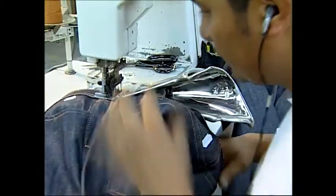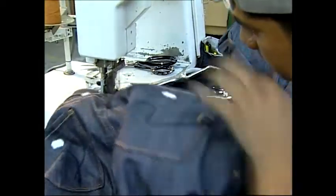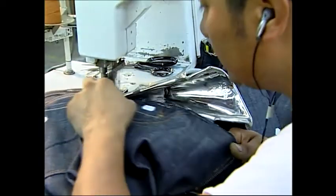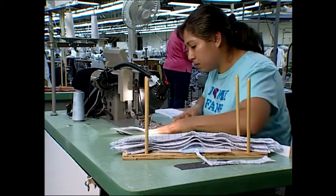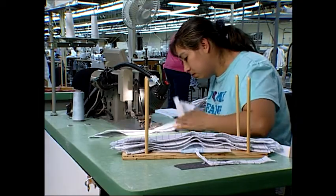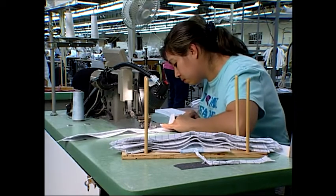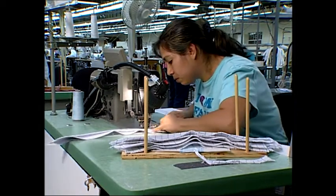The apparel industry uses about 30 stitch patterns that are categorized in six classes, ISO 100 through 600. The decision on which stitch to use is based on the seam it will create, the location of that seam on the garment, and the kinds of fabric that the seam joins.